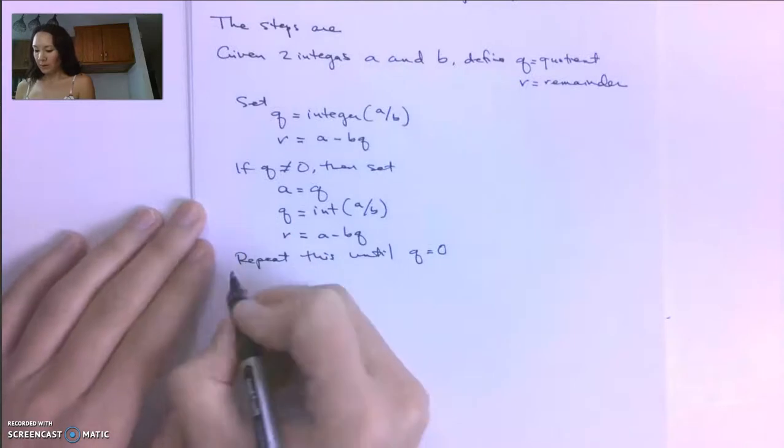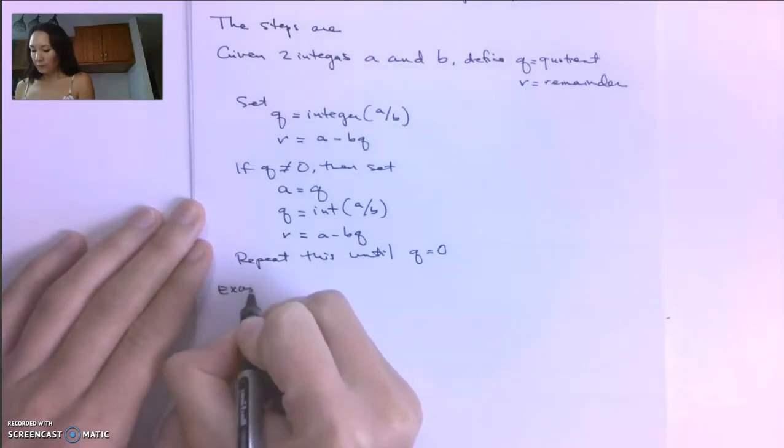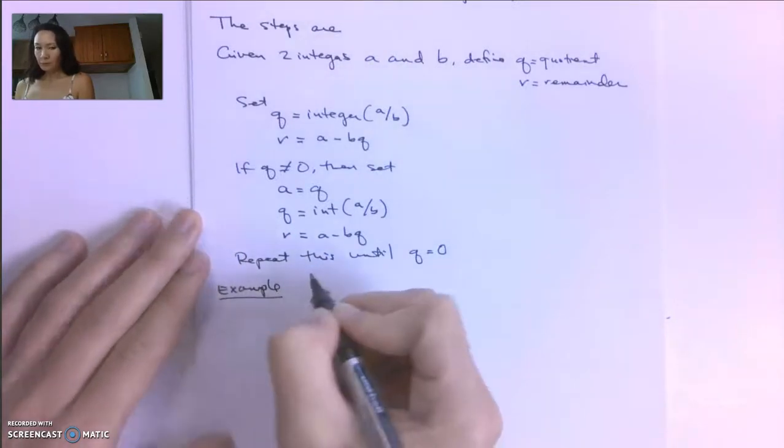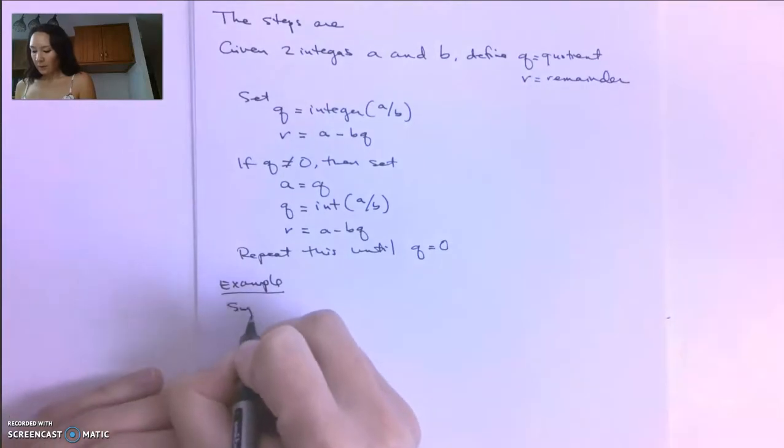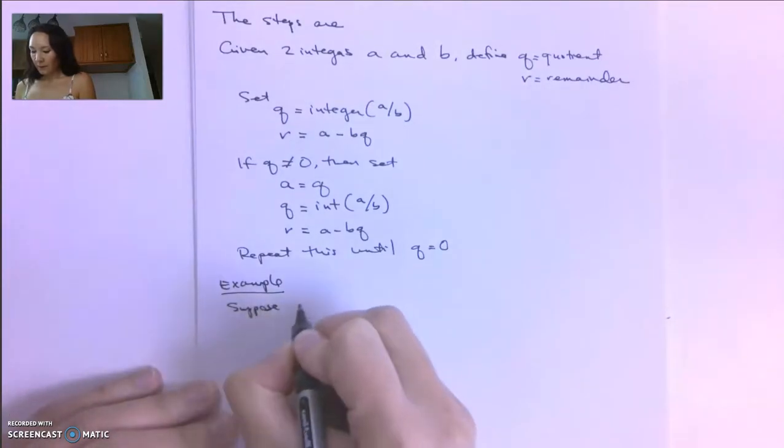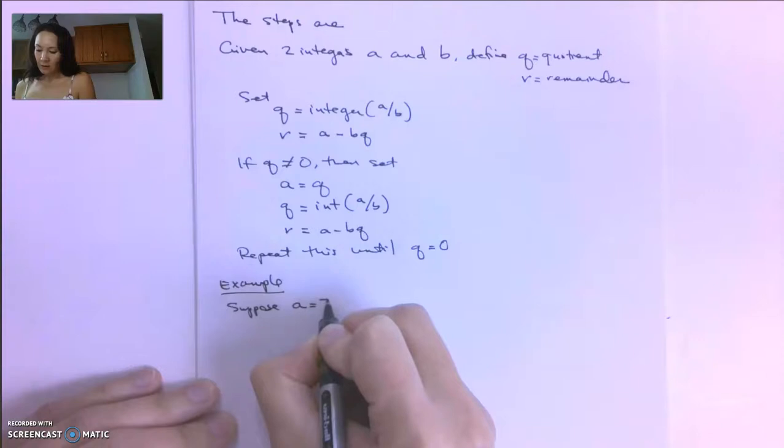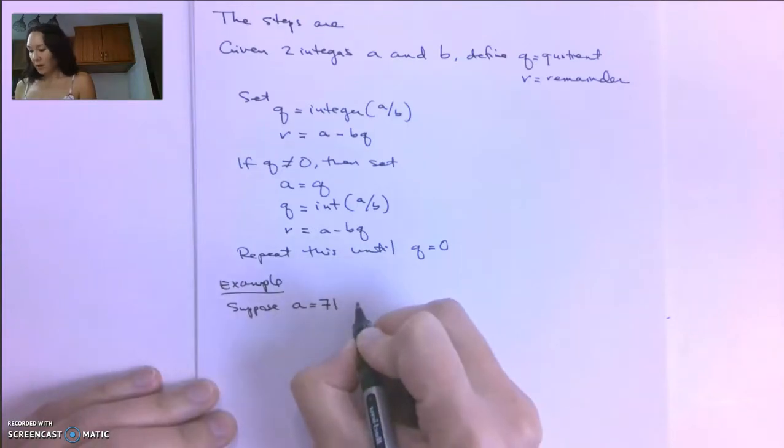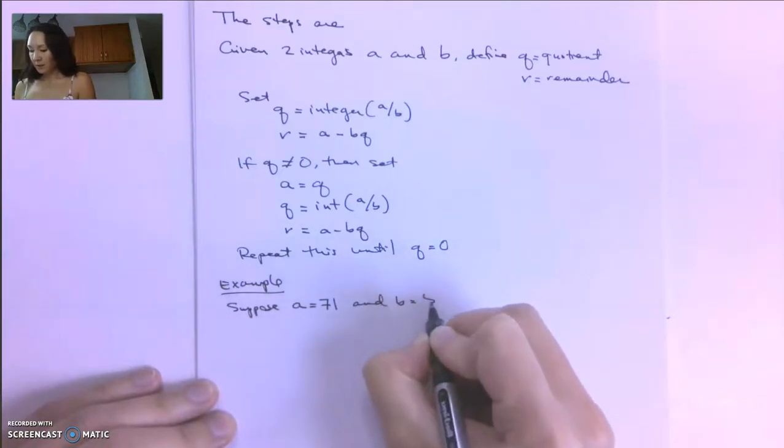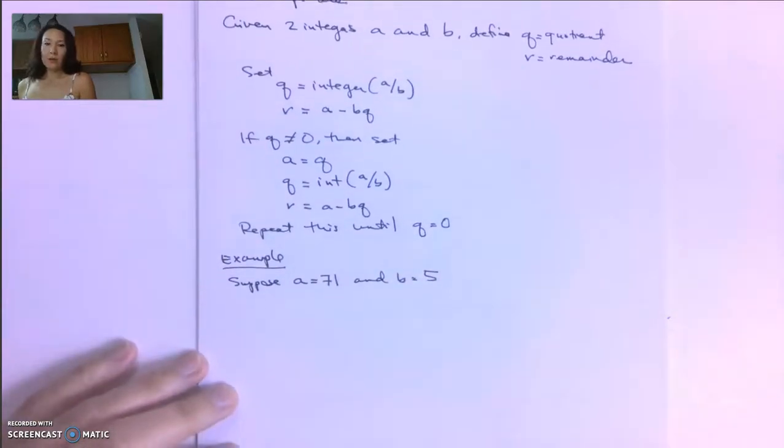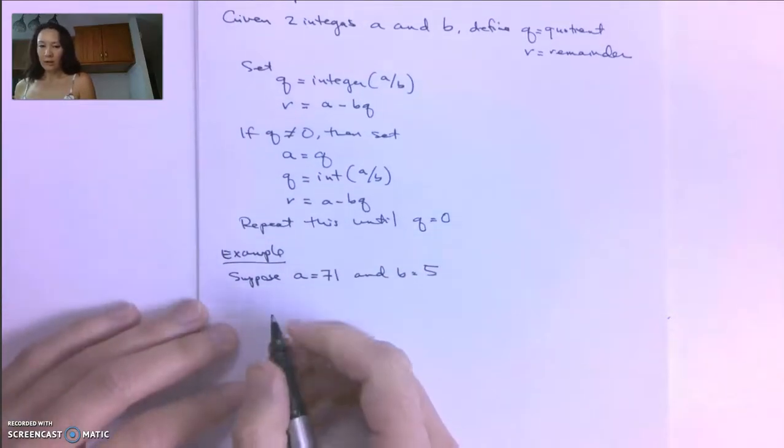So let me show you an example. Suppose we have an A of 71 and B is 5. So we're going to use this iterative division algorithm.